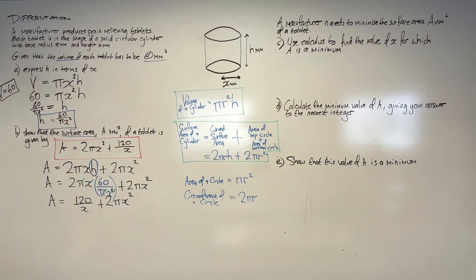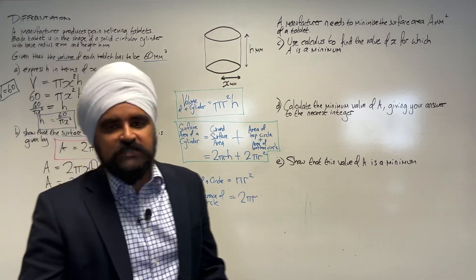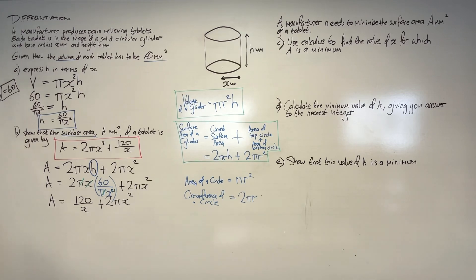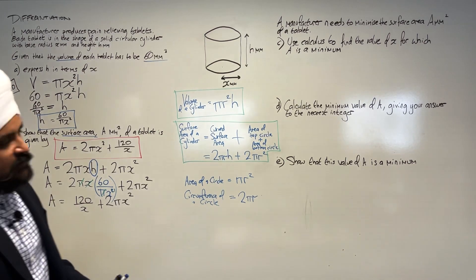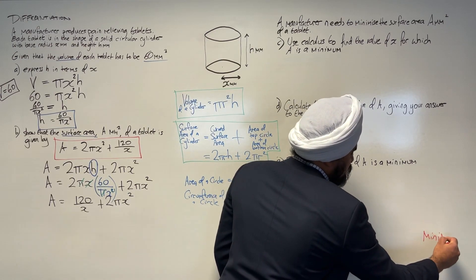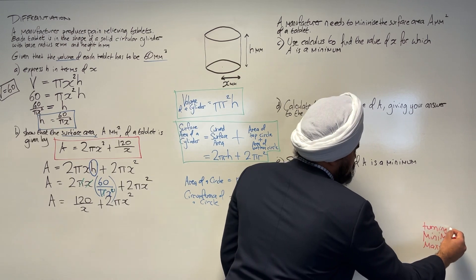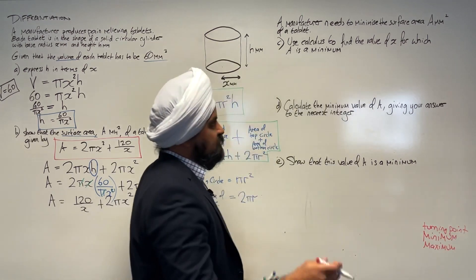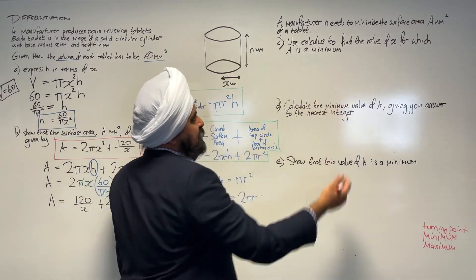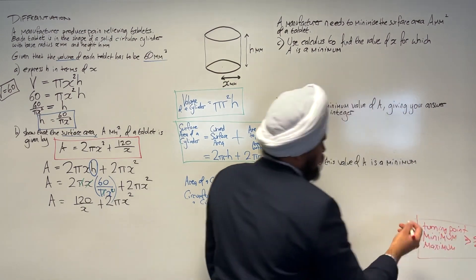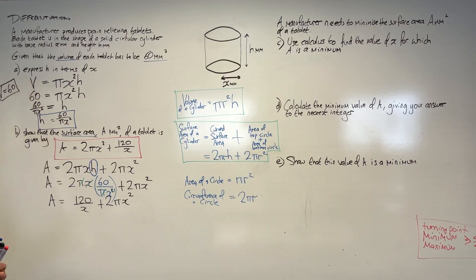Moving on to part C: the manufacturer needs to minimise the surface area of a tablet — use calculus to find the value of x for which A is a minimum. As soon as you see the word minimum, or in other questions maximum, turning point, or stationary point — any of those words — the first thing you should think is: I need to set dA by dx equal to 0. Because dA by dx equals 0 at a turning point, a minimum, or a maximum. That's the first thing that should come to mind.